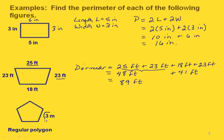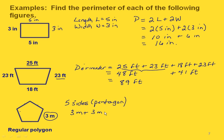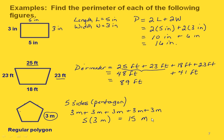Now we have a regular polygon where the length of each side is three meters. This one has five sides, which makes it a pentagon. We have five sides each three meters, so we could add three meters five times, or take five times three meters. Either way, we end up with a total of 15 meters.